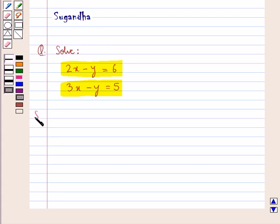Let's proceed with the solution now. We have simultaneous linear equations 2x minus y equal to 6 and 3x minus y equal to 5. Let this equation be equation 1 and this be equation 2.